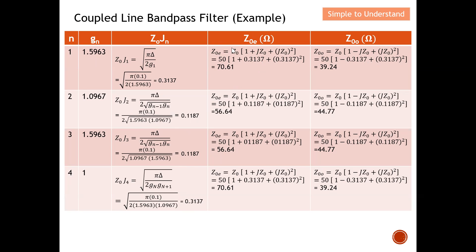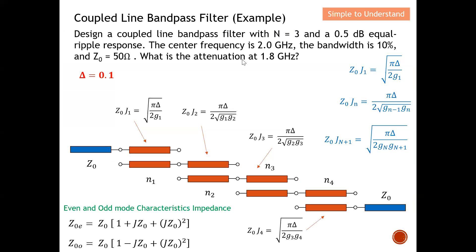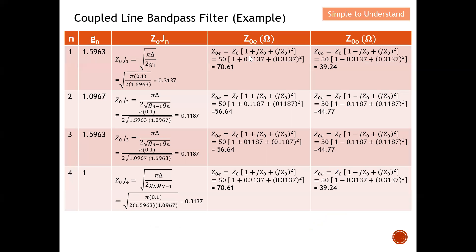The even and odd mode characteristic impedance formulas were introduced earlier. For the even mode: Z₀ₑ = Z₀ · (1 + J·Z₀ + (J·Z₀)²), where J·Z₀ = 0.3137 for the first section, so (0.3137)² is computed to get Z₀ₑ. For the odd mode the formula is the same but with a minus sign. From here, the even and odd mode characteristic impedances for each of the four sections can be calculated in the same way.